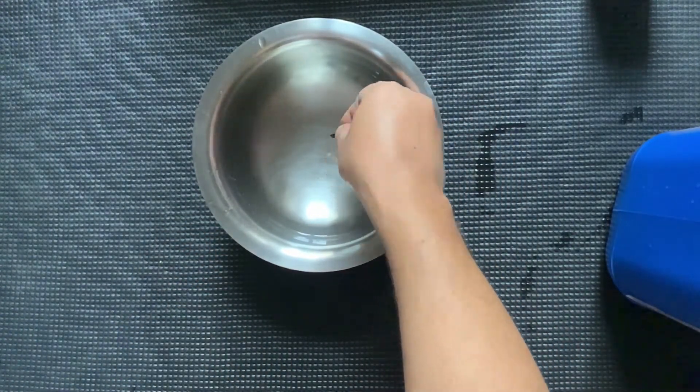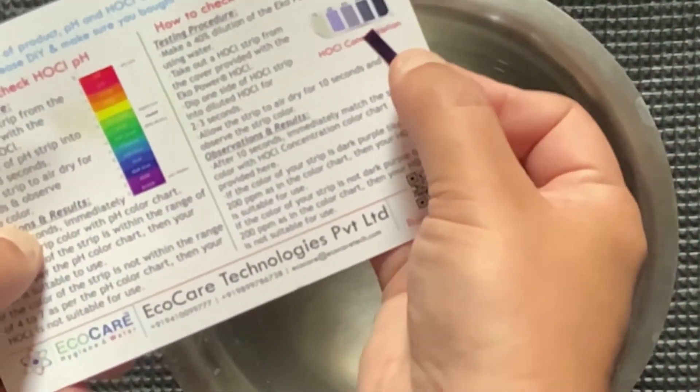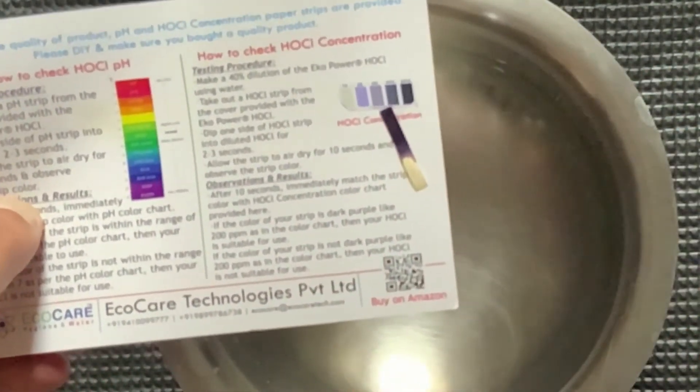The color of the strip shall turn to dark purple or violet color. The color should match with the 200 parts per million color chart provided with the kit.